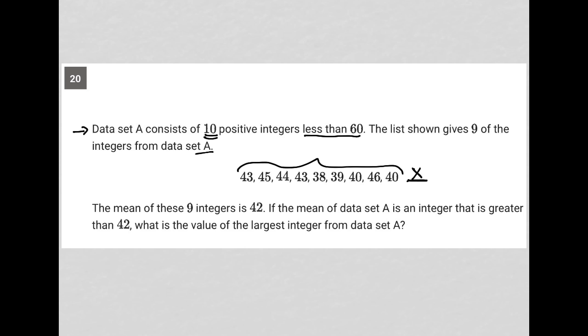The mean of these nine integers is 42. Okay, so what does that mean? That means if I were to add up all nine of these values, which I will do right now. So 43 plus 45 plus 44 plus 43 plus 38 plus 39 plus 40 plus 46 plus 40, I'm getting 378 as the sum of those nine.